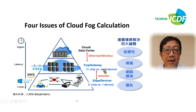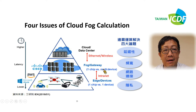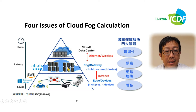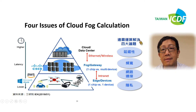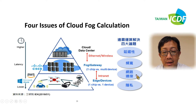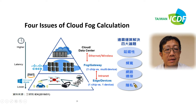There are four issues about cloud and fog computation that we have to solve: the delay, the bandwidth, the network connectivity, and the privacy.